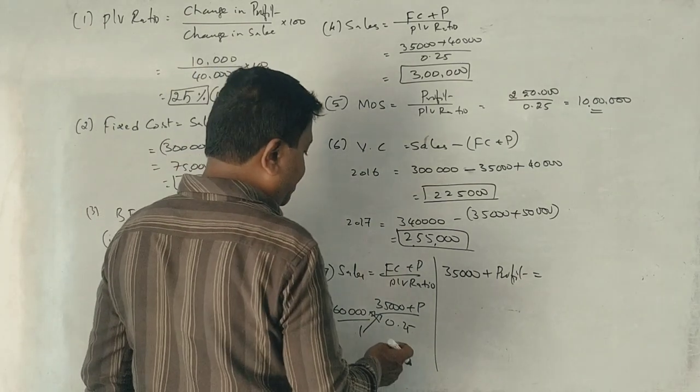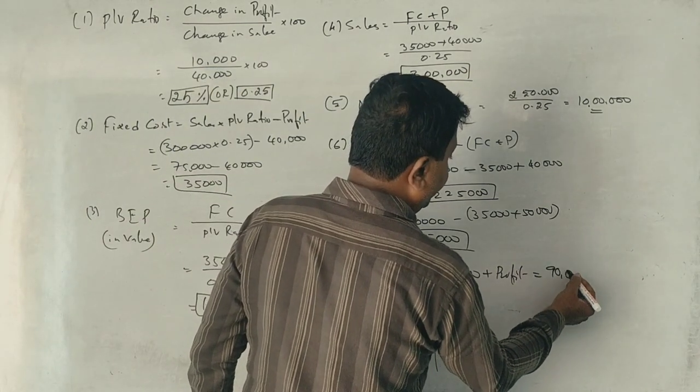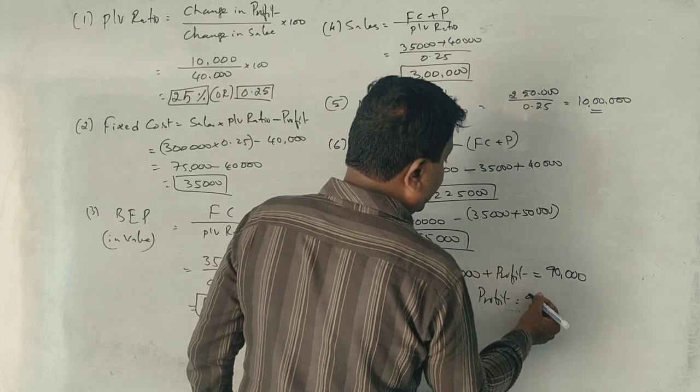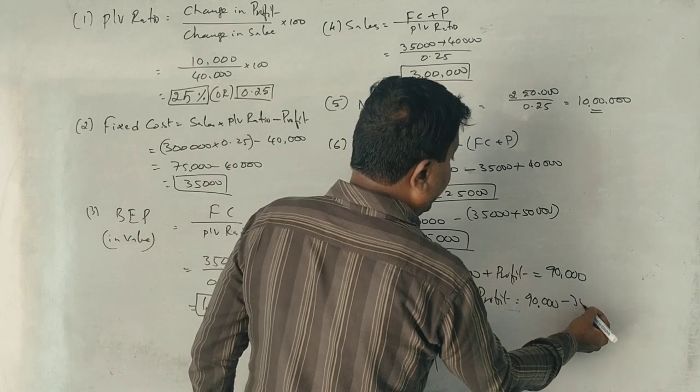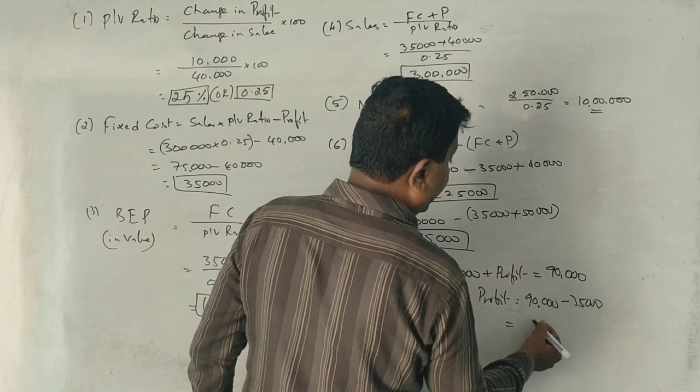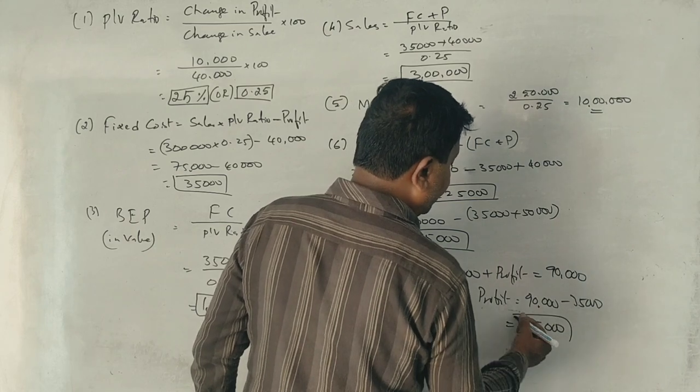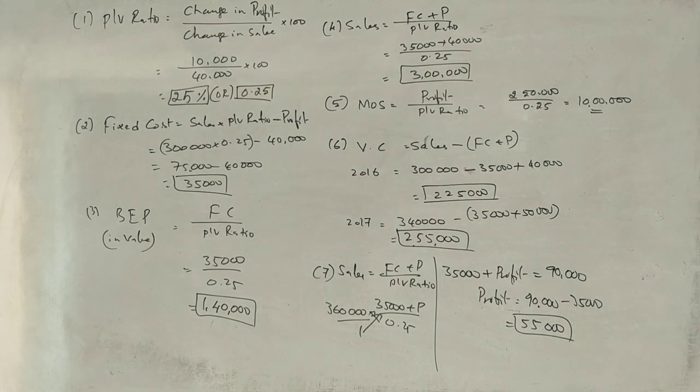Profit equals 90,000 minus 35,000, so 55,000 profit. This is a question for practice.